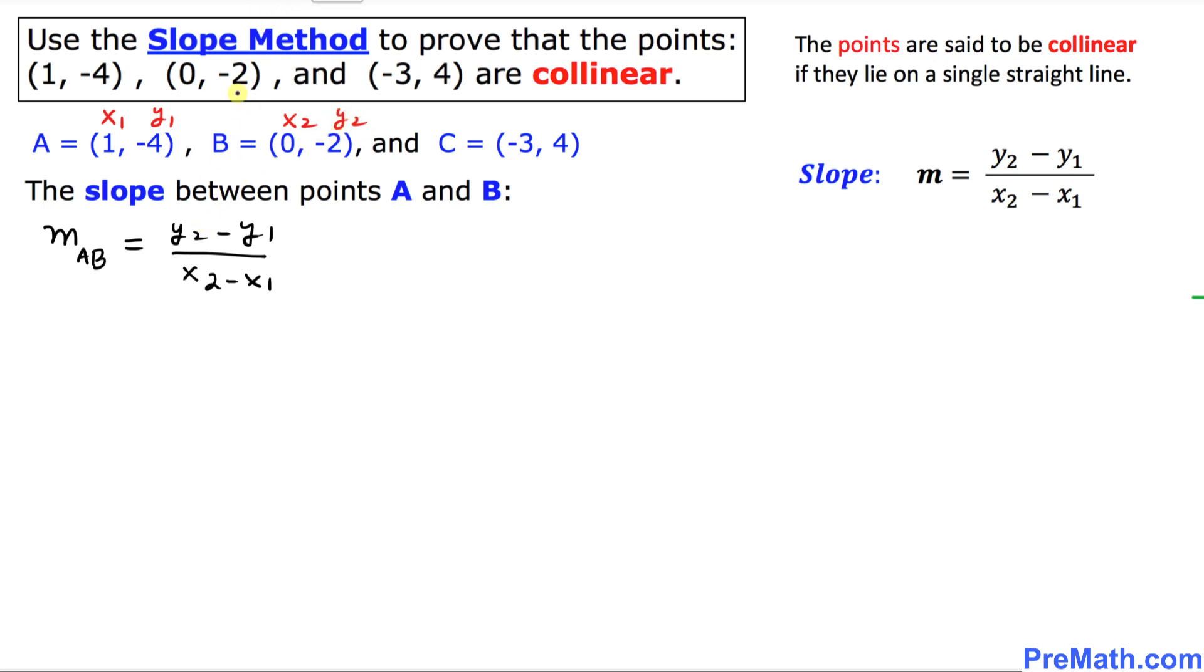Let's fill in the blanks right now. So the slope is going to be equal to, in our case, y2 is -2 minus y1 is -4 divided by x2 is 0 minus 1. Let's simplify this thing.